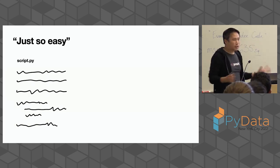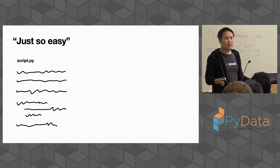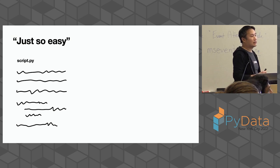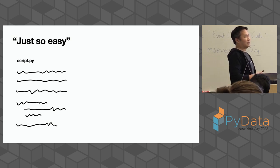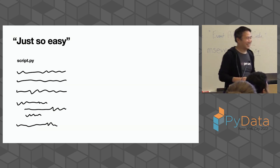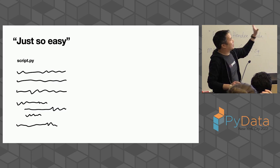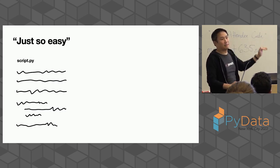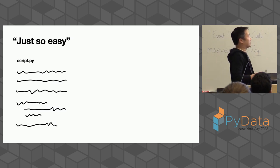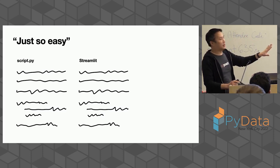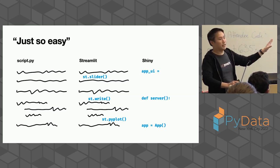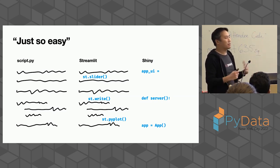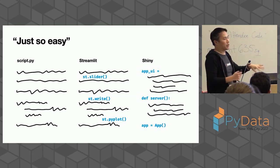First I want to examine: is Streamlit really that easy? In my impression, if you stay exactly within what Streamlit is really good for, it's fine. But if you want to do something just a little bit different, you bang your head for days. The promise of Streamlit is that you can take a straightforward analysis script that goes beginning to end, sprinkle in some Streamlit, and boom — interactive application. Compare that to Shiny, which has a shape that your app needs to fit into: it has an app UI, a server, and you need to put your code into that shape.